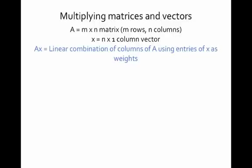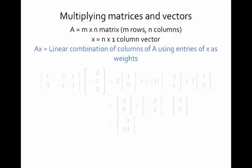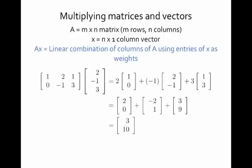Very importantly, we have the same number of entries in X as we have columns in A. By A times X, what we mean is we're going to form a linear combination of the columns of A using the entries of X as the weights. Here's an example — let's walk through it step by step.